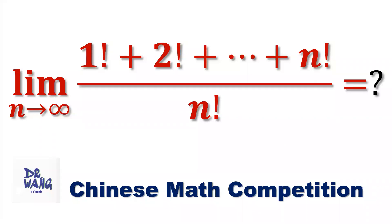Hello everyone, I'm Dr. Wen. Here is the question. What is the limit of 1 factorial plus 2 factorial plus until plus n factorial divided by n factorial as n goes to infinity?